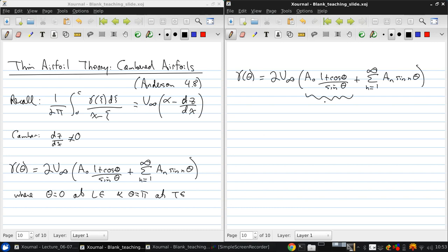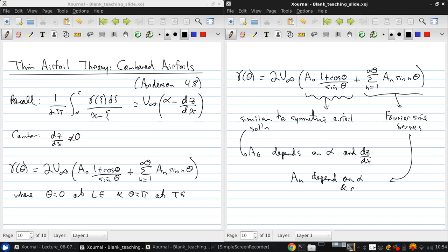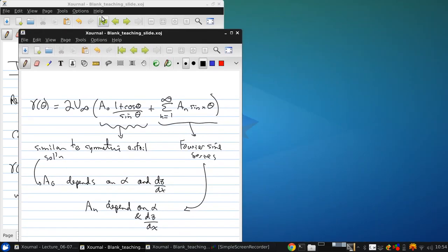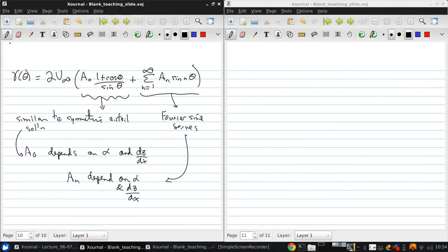Remember, this first term is similar to the symmetric airfoil solution. From this, we can say that a0 depends on angle of attack and dz dx. This term is a Fourier sine series. So the an depend also on alpha and dz dx.